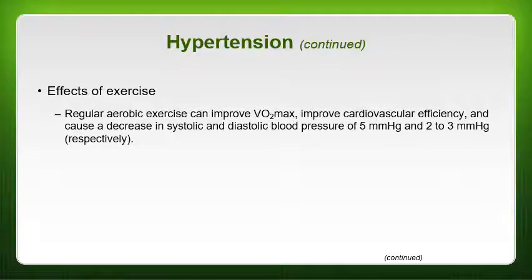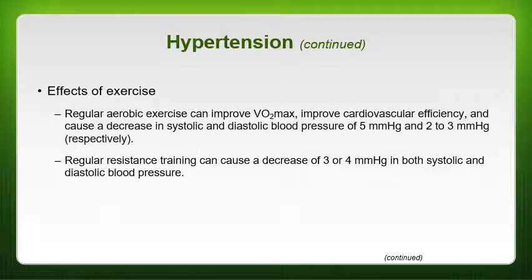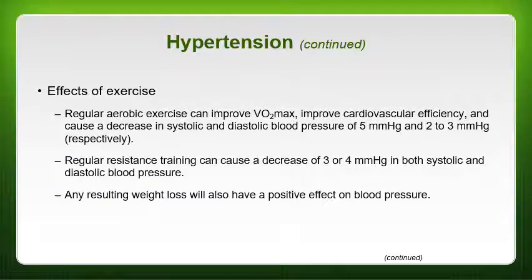Regular aerobic exercise can improve VO2 max and cardiovascular efficiency, and actually cause a decrease in both systolic and diastolic blood pressure. The decreases you can get are pretty impactful, especially combined with weight loss if that's contributing to the hypertension. Resistance training can also cause a decrease of about three or four millimeters of mercury in both systolic and diastolic blood pressure, and any resulting weight loss can have a positive effect as well.